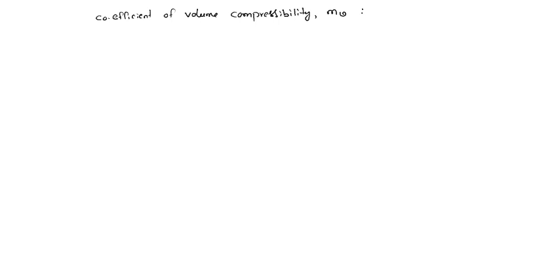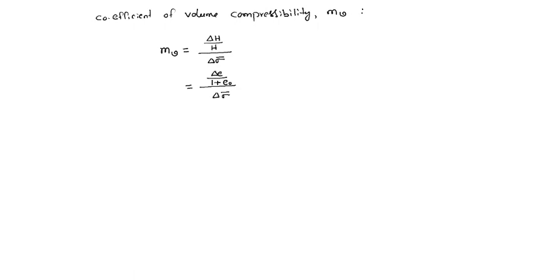Or void ratio will decrease. So mv is defined as: mv = (ΔH/H) / change in effective stress, which is equal to Δe / (1 + e₀), divided by change in effective stress. This is the definition of mv. Its unit is meter square per kilo Newton.